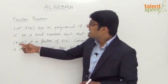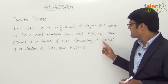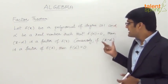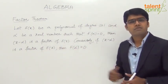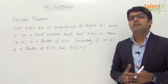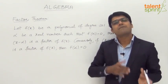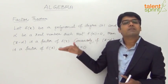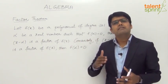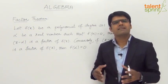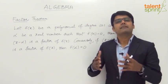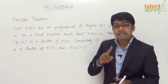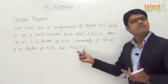Conversely, if x minus alpha is a factor of f of x, then f of alpha has to be 0. If x minus alpha is a factor, it divides f of x completely — there is no remainder. Since x minus alpha is a factor, f of x is completely divisible by x minus alpha. When it is completely divisible, there won't be any remainder. That is the reason the remainder f of alpha will be equal to 0.